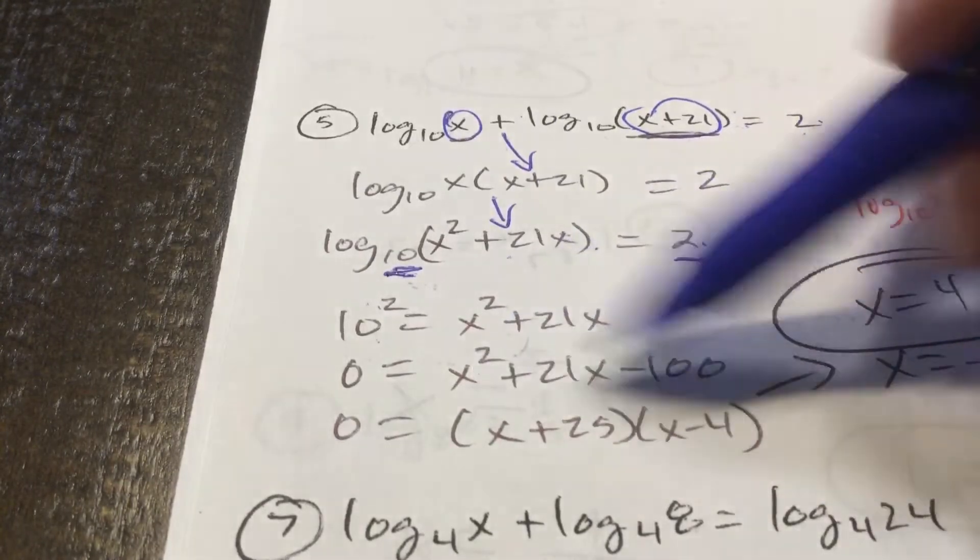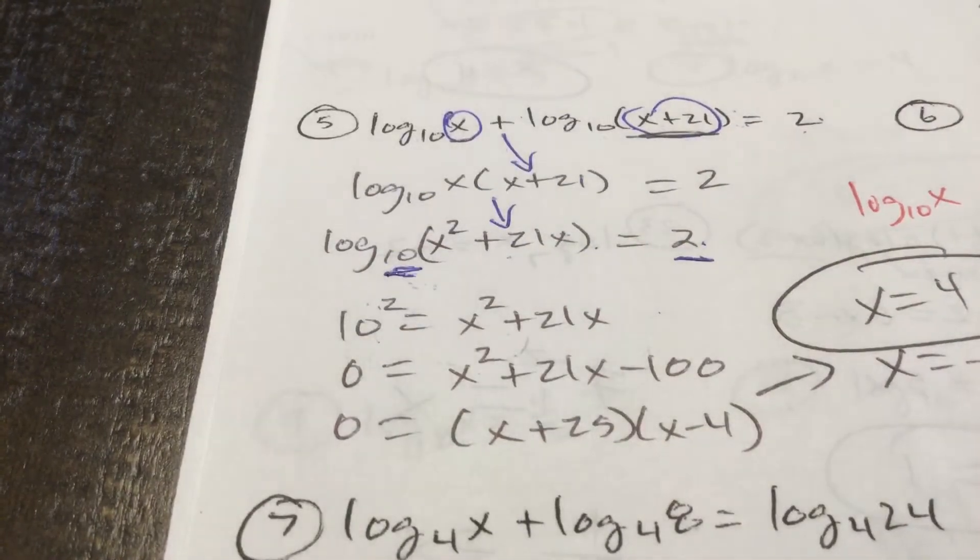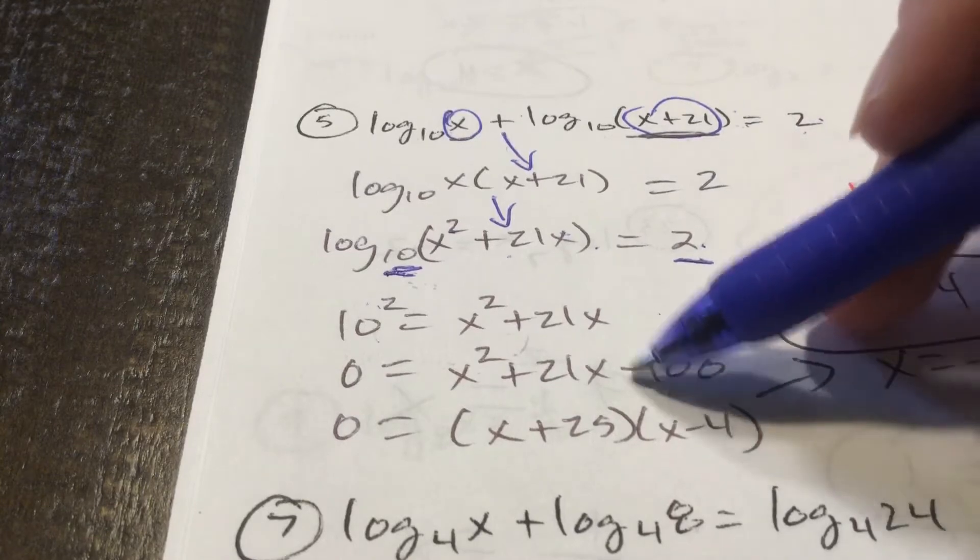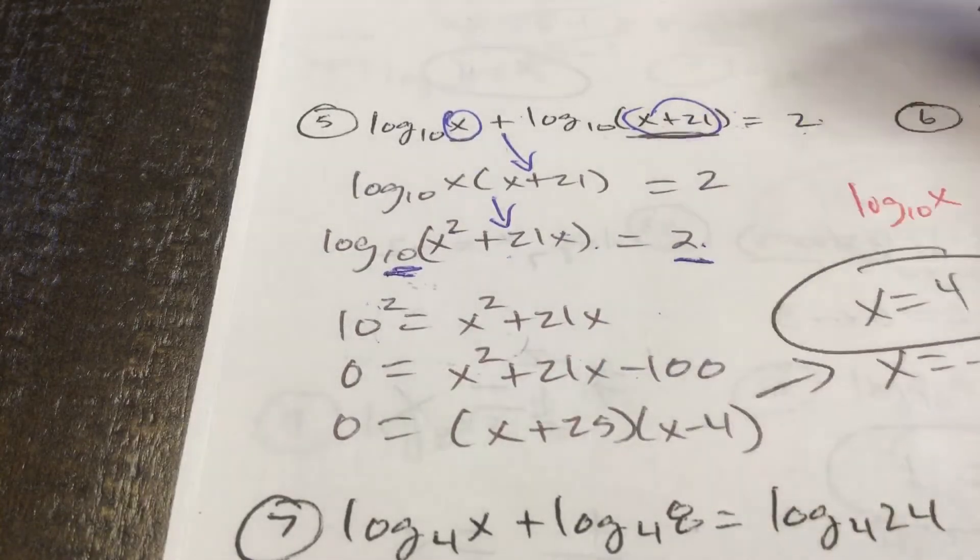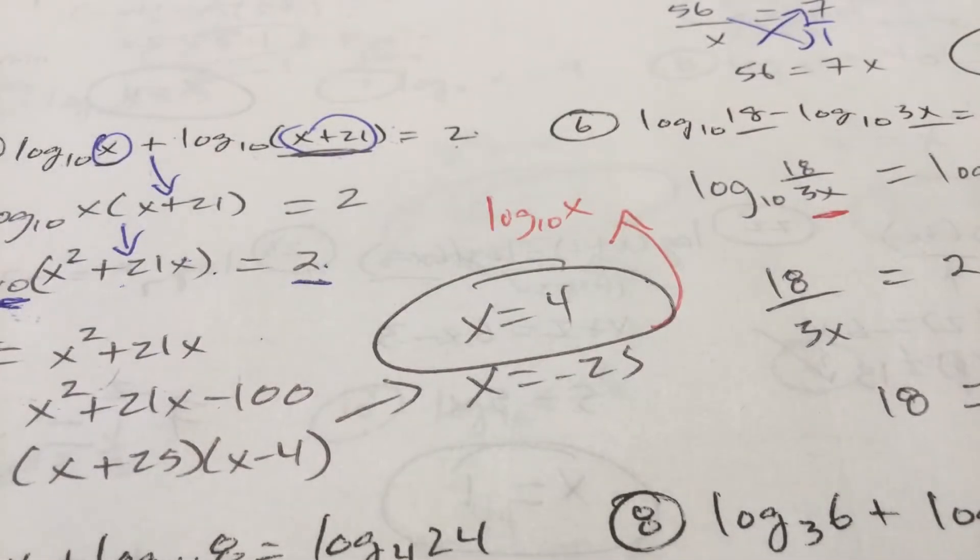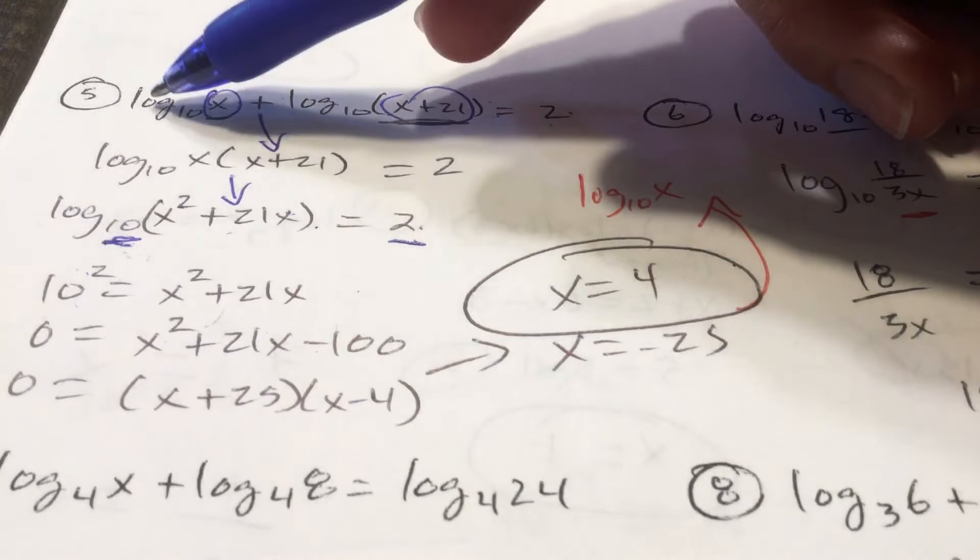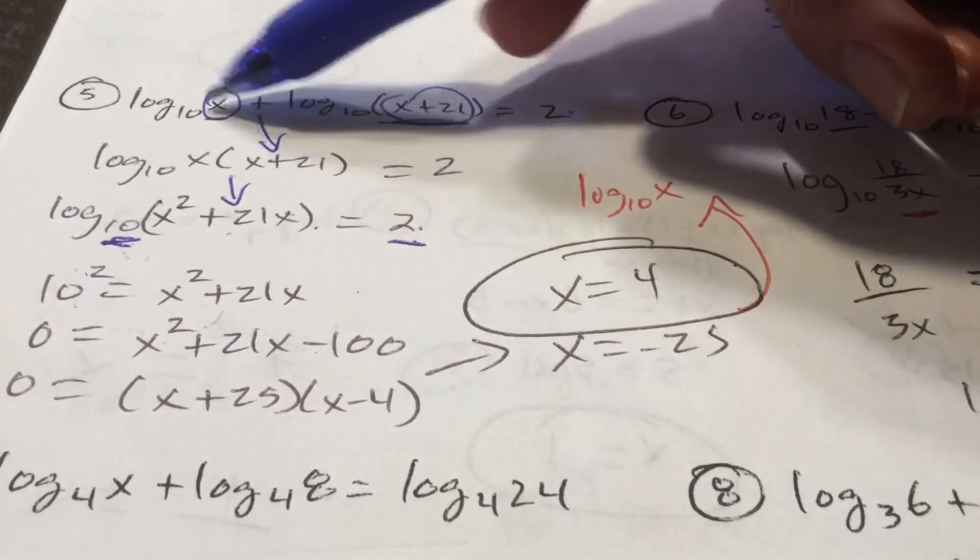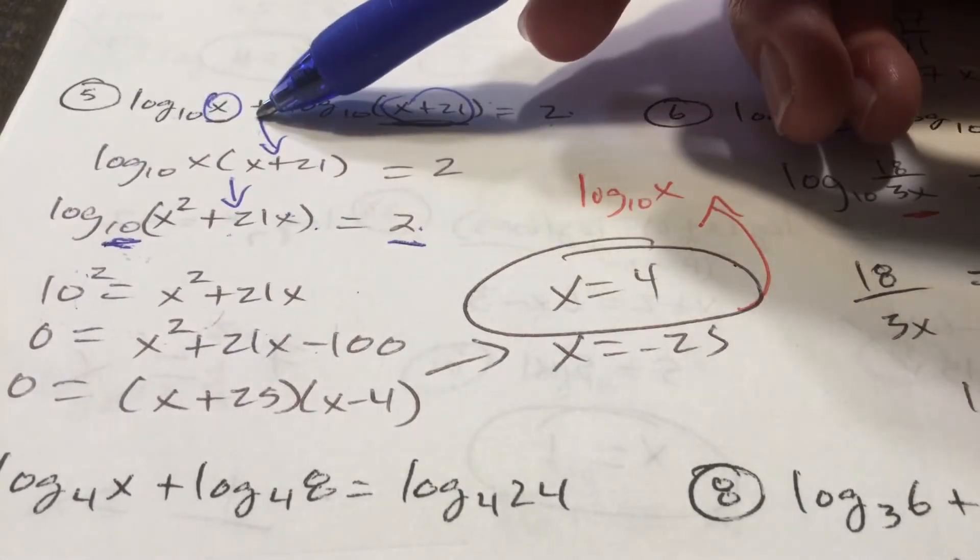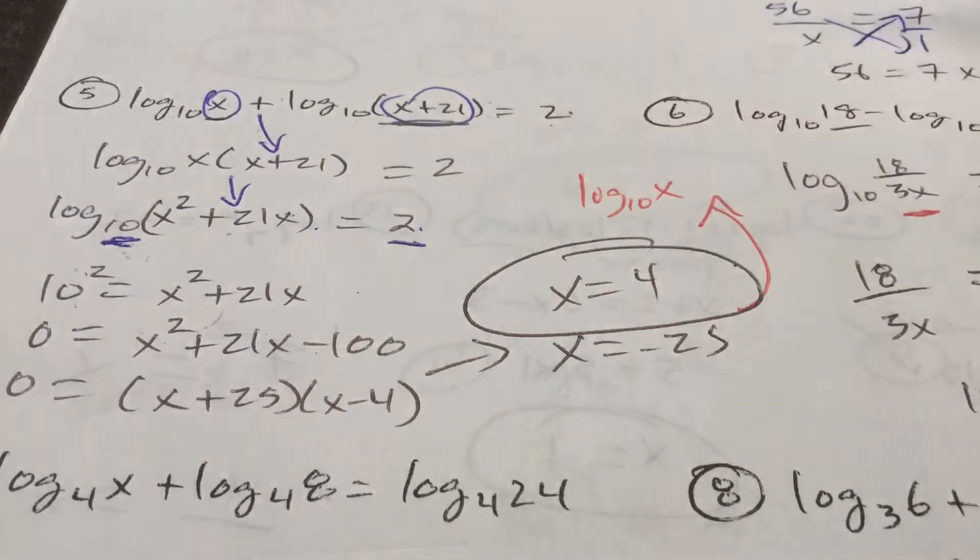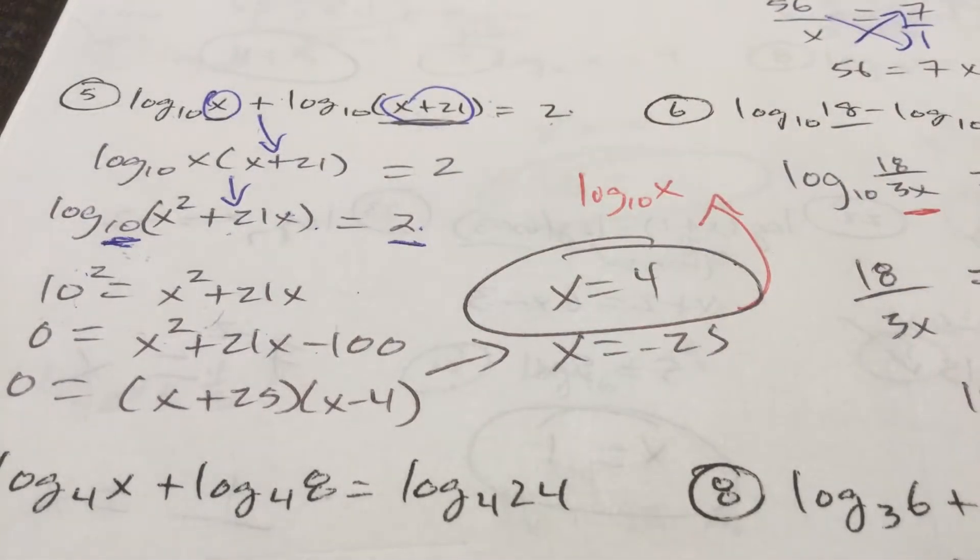All right. So, that is 100. I need to move the 100 over. When I have a middle term, I've got to factor. I've got to set it equal to 0 for sure. We'll multiply this to 100, differs by 21. That is 25 and negative 4. I get x equals, cover up method, negative 25 and 4. Plug it into the log base 10 of x. You can't have log of a negative 25, but you can have a log of 4. All right. That is the winner. x equals 4. x equals negative 25 is extraneous.